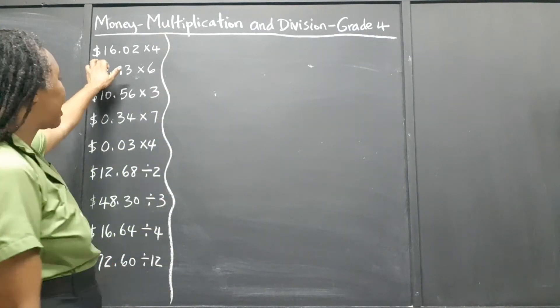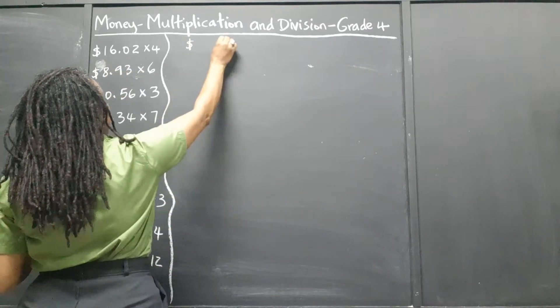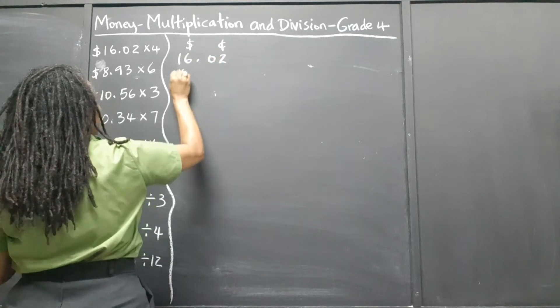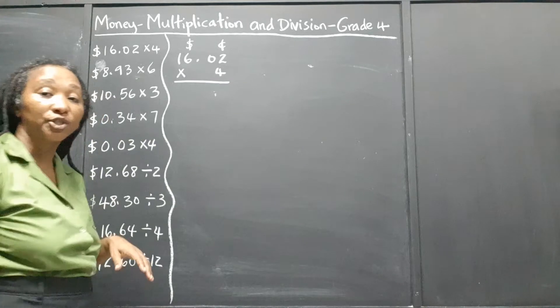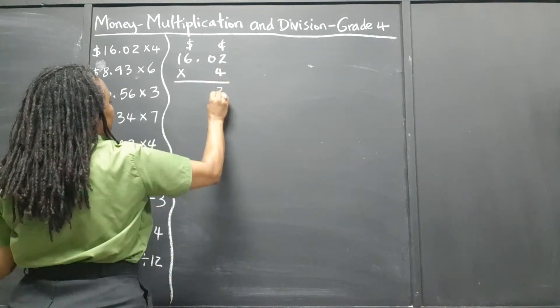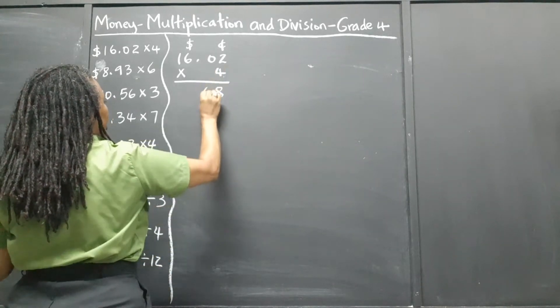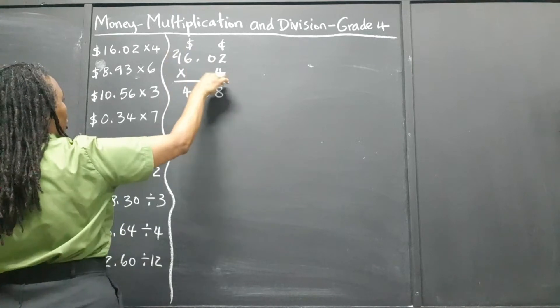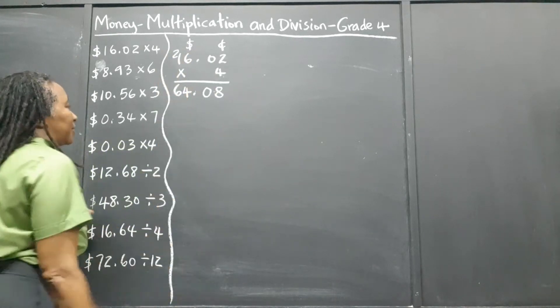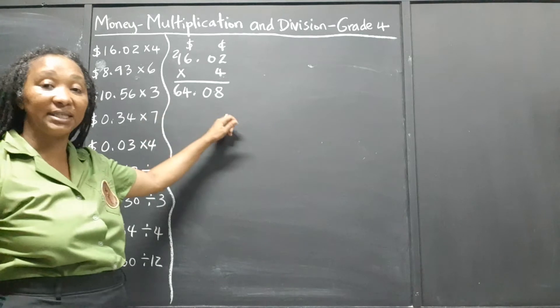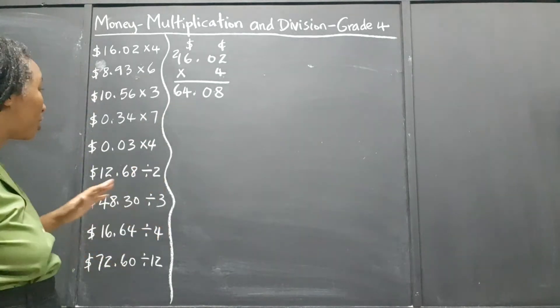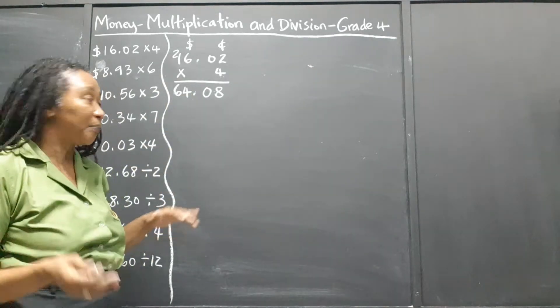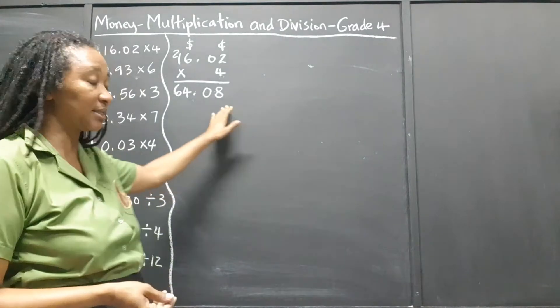So $16.02 times 4. We just go straight and work it. 4 times 2 is 8. 4 times 0 is 0. 4 times 6 is 24. 4 times 1 is 4, and 2 is 6. So that's $64.08. Just like what we would normally do, we just make sure we pull back our decimal point to separate the dollars from the cents.